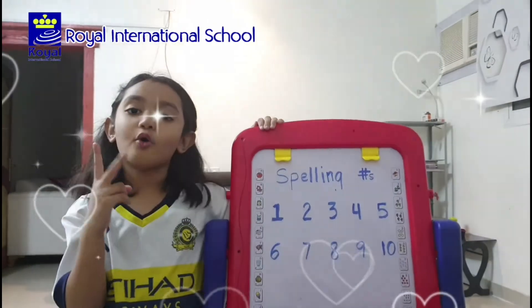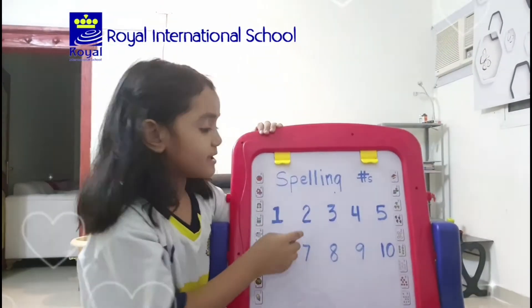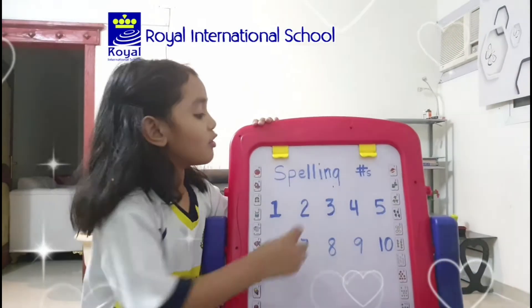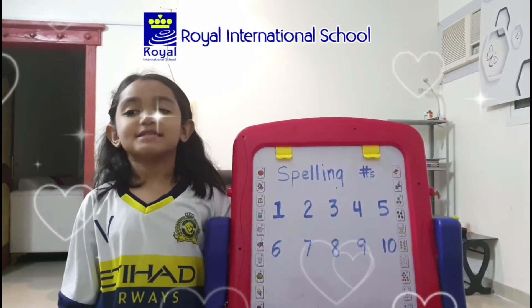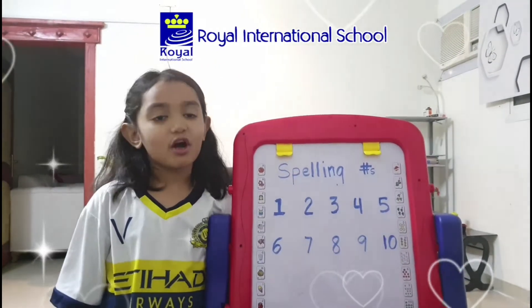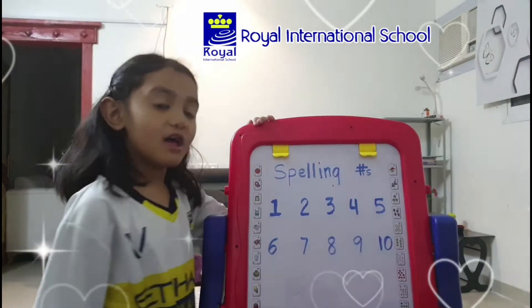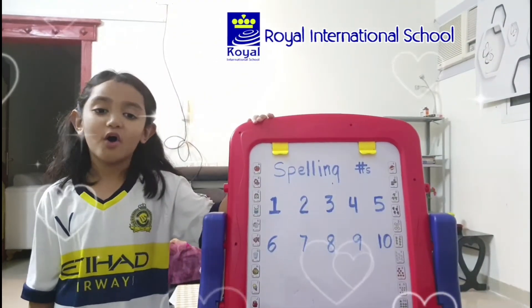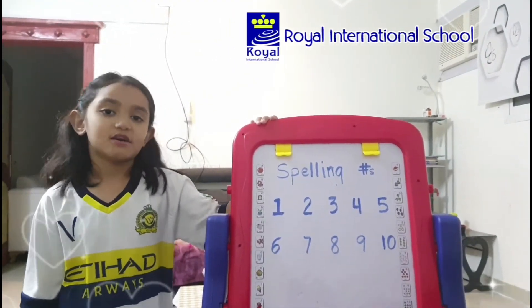One: O, N, E. Two: T, W, O. Three: T, H, R, E, E. Four: F, O, U, R.